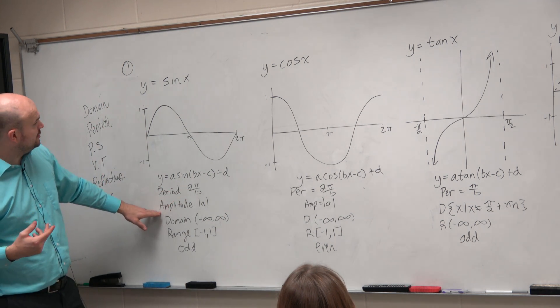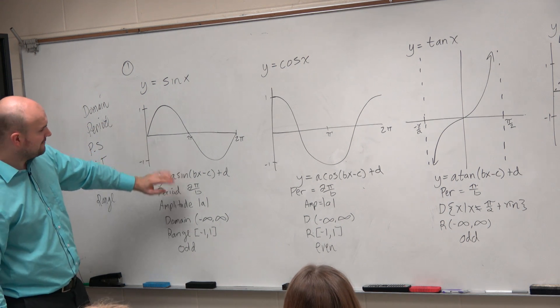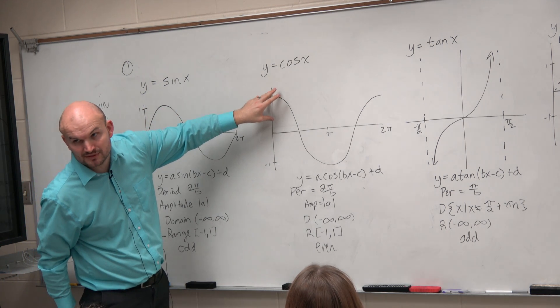The amplitude, which is, again, a new vocabulary, is the half distance from the max to the min of a graph. So therefore, that's just going to be the absolute value of a. Notice how only sine and cosine have an amplitude.